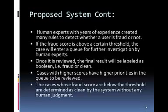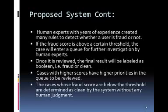Continuing with the proposed system: human experts with years of experience created many rules to detect whether a user is fraudulent or not. If the fraud score is above a certain threshold, the case will enter a queue for further investigation by human experts. Once reviewed, the final result will be labeled as Boolean — that is, fraud or clean. Cases with higher scores have higher priorities in the queue. Cases whose fraud score is below the threshold are determined as clean by the system without any human judgment.